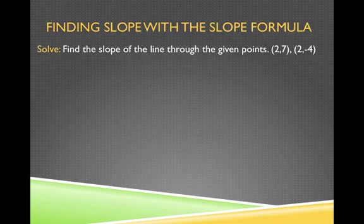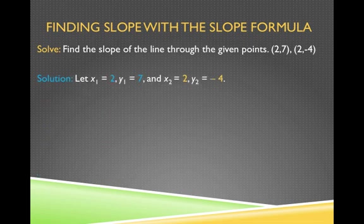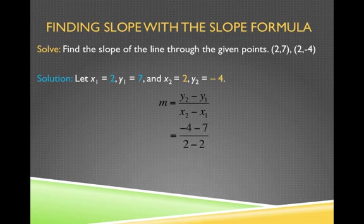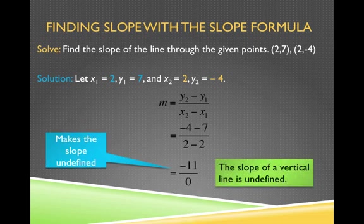Let's try two more points: (2, 7) and (2, -4). I label x1, y1, x2, y2 and plug in: negative 4 minus 7 in the numerator, and 2 minus 2 in the denominator. I have a problem here — this is 0 in the denominator, which we cannot do. We cannot divide by 0. That means negative 11 over 0 is undefined, and because it's undefined, that tells me we have a vertical line — a line running north-south.